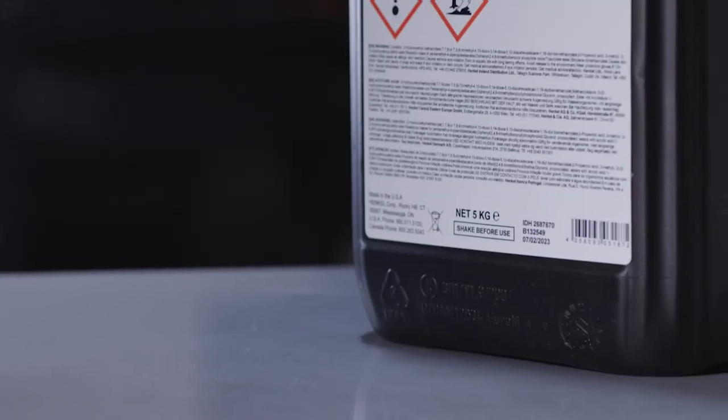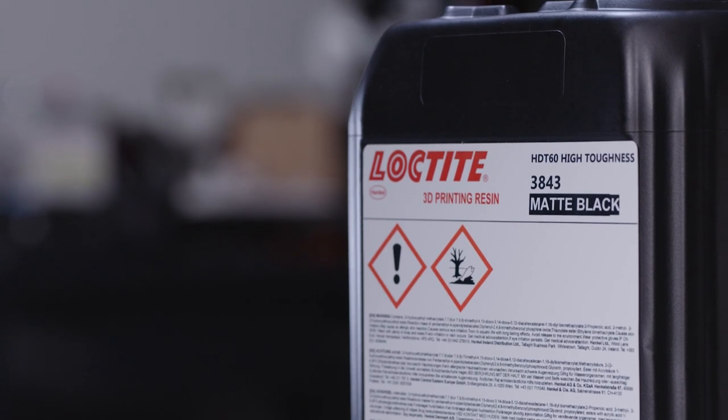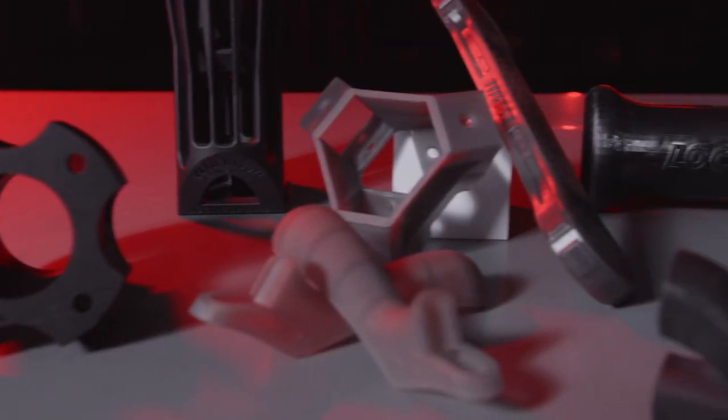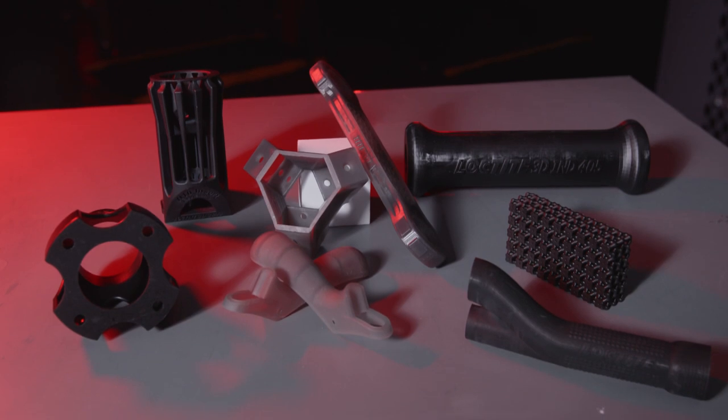Loctite 3D3843 is ideal for manufacturing aids, jigs and fixtures, and housings. It can also be used for industrial, automotive, and consumer goods markets. Loctite 3D3843 is also an ABS-like material and suitable for a wide range of applications.